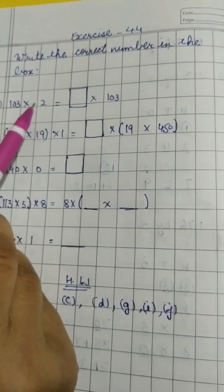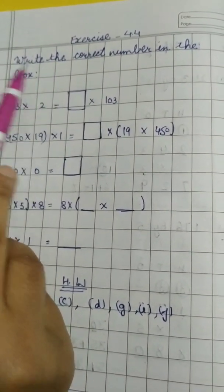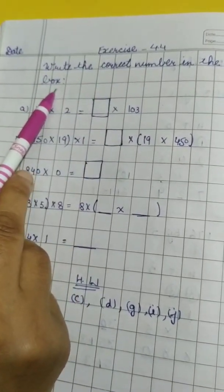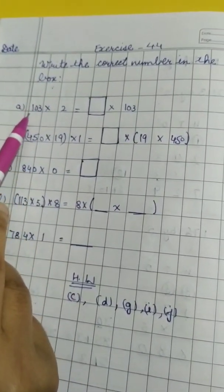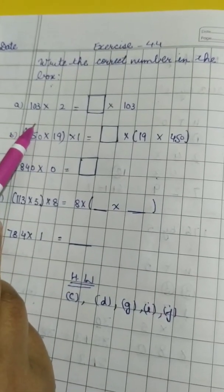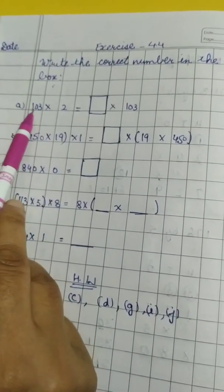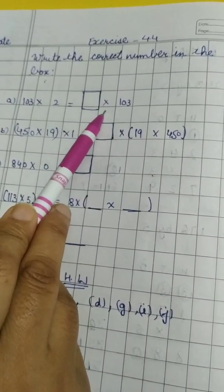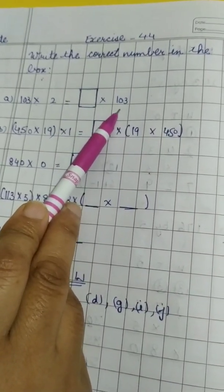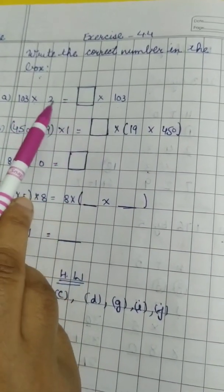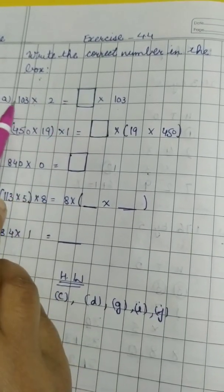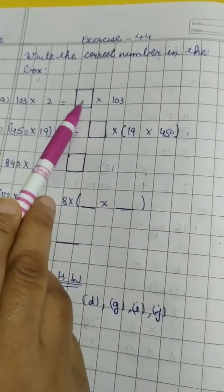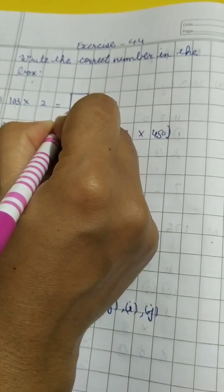Now let us write Exercise 4.4 in the copy. The question is: write the correct number in the box. I have written selected questions here and the rest you have to do yourself — you have to use the properties. For example: 103 multiplied by 2 equals dash multiplied by 103. The product remains the same when we change the order, so 103 appears on both sides and 2 is missing — the answer is 2.